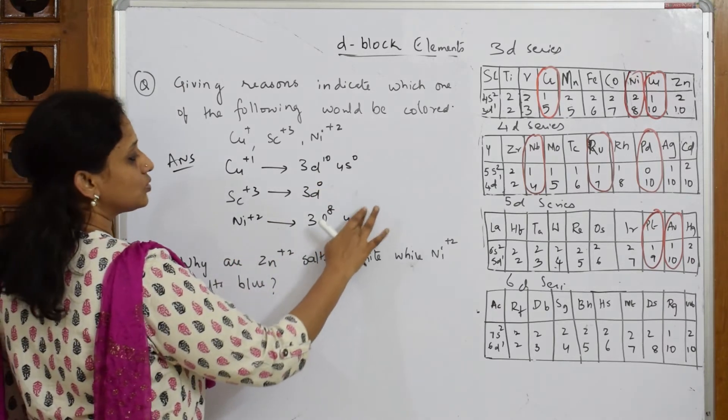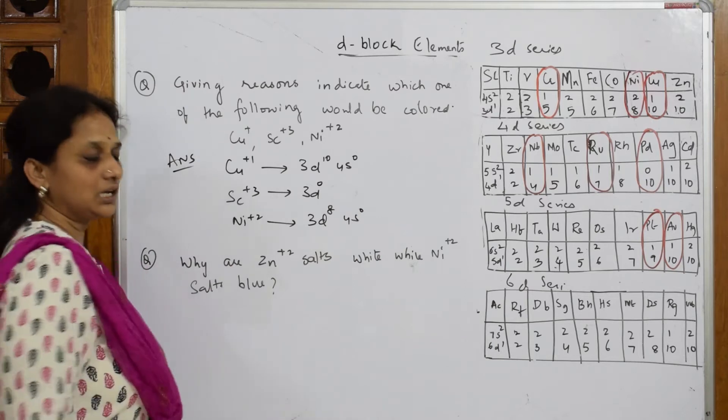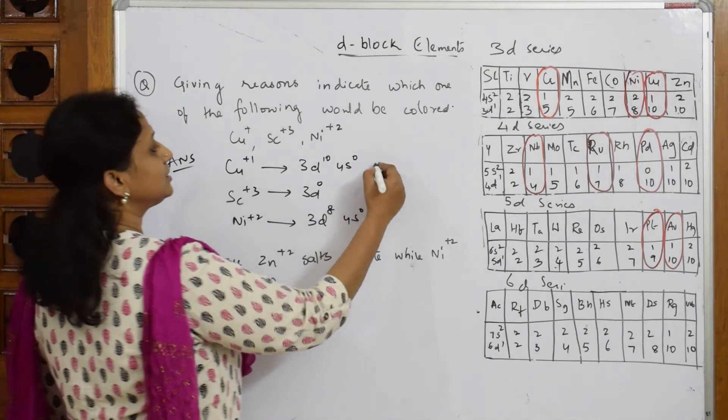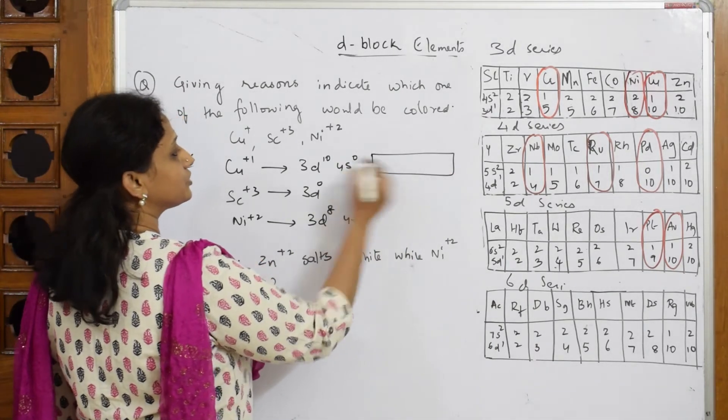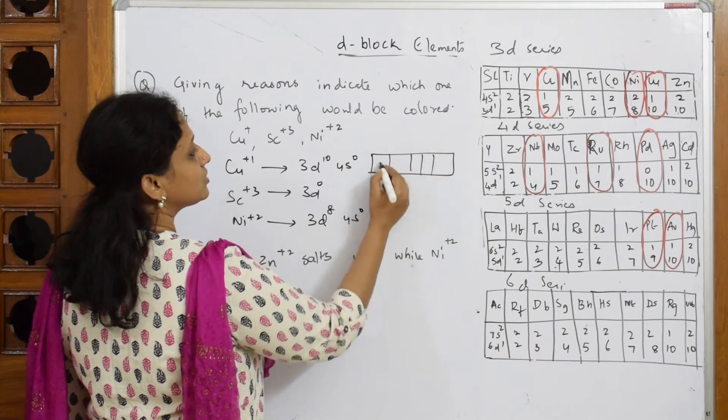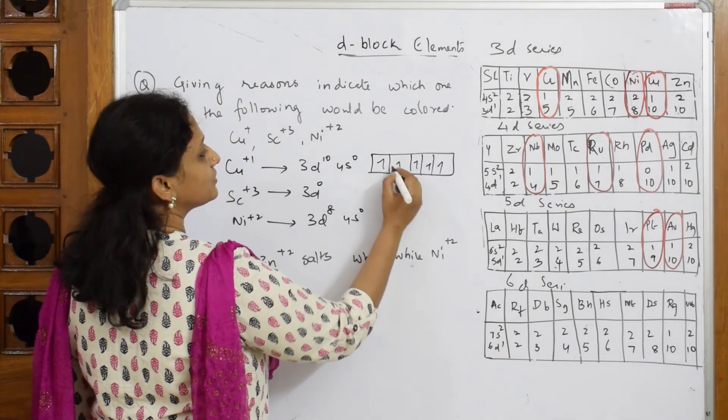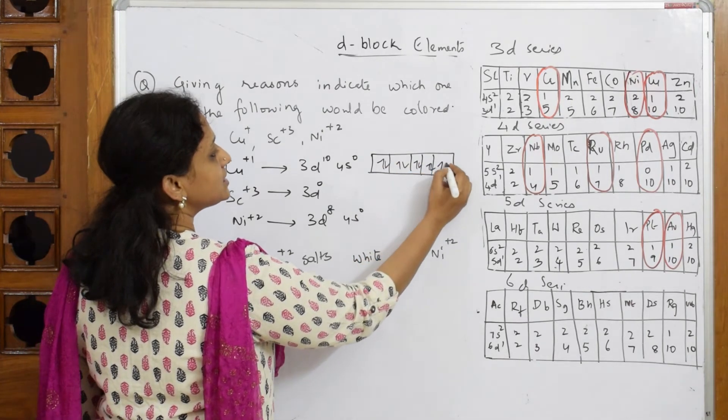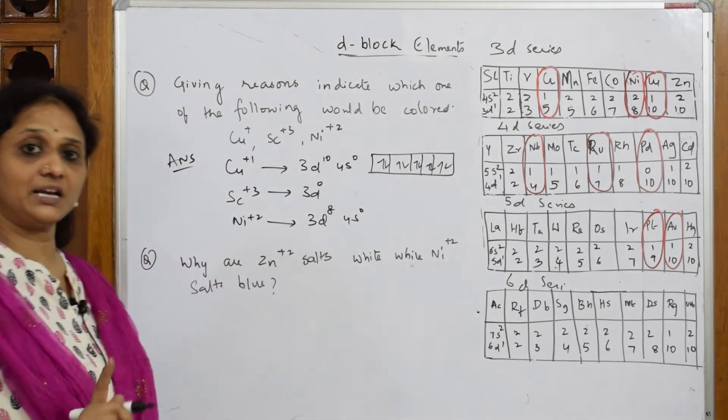Now after this, try to write the configuration for 3d10. Now this is your 1, 2, 3, 4, 5, 6, 7, 8, 9, 10 - fully filled.